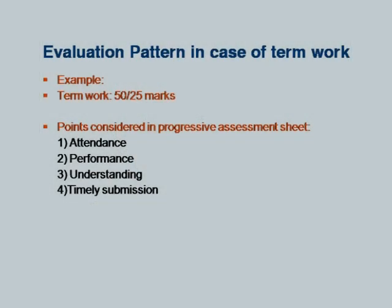For term work evaluation, if term work is assigned for a subject, it is either 50 marks or 25 marks. Points considered in the progressive assessment sheet include: attendance, performance of the student in experiments, understanding of the assignment, and timely submission of journals. These criteria are used while giving term work marks.